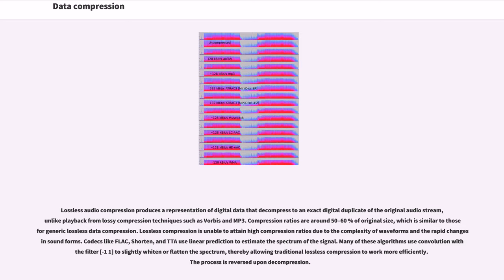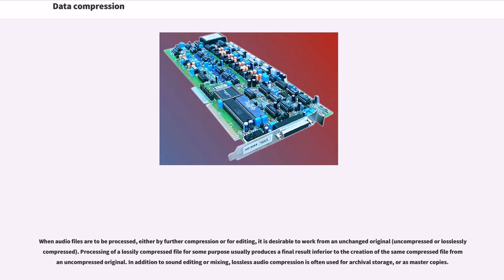Codecs like FLAC, Shorten, and TTA use linear prediction to estimate the spectrum of the signal. Many of these algorithms use convolution with the filter minus 1, 1, to slightly whiten or flatten the spectrum, thereby allowing traditional lossless compression to work more efficiently. The process is reversed upon decompression.